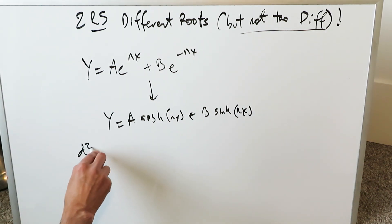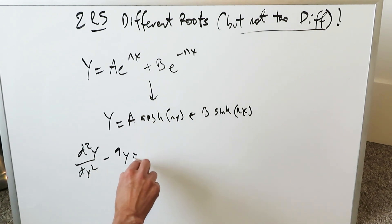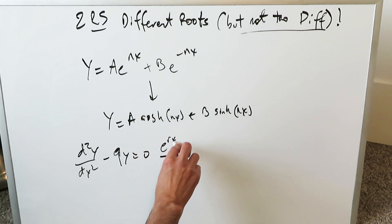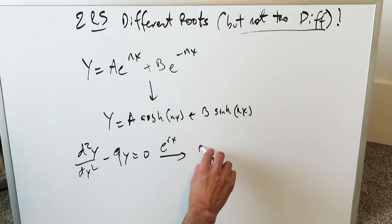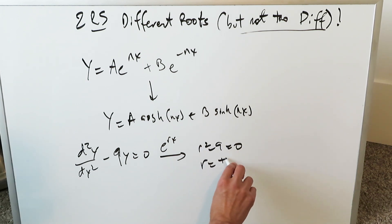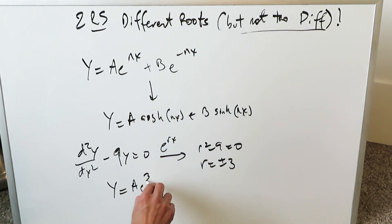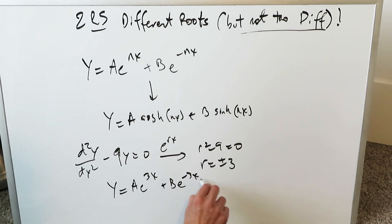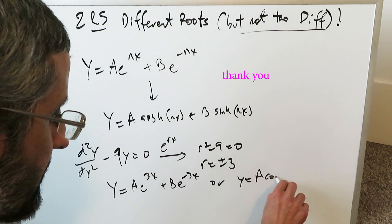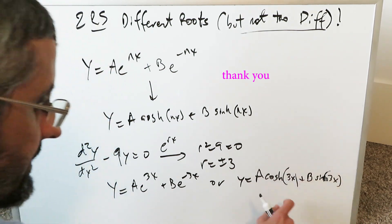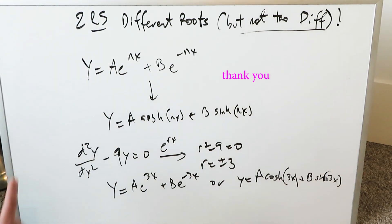For example, d squared y over dx squared minus 9y equals 0 generates this scenario. After the e to the rx substitution, you get r squared minus 9 equals 0, so r equals plus and minus 3. You can write the solution two ways: y equals a e to the 3x plus b e to the minus 3x, or y equals a hyperbolic cosine 3x plus b hyperbolic sine 3x. The negative gets consumed in the procedure shown earlier. Keep these peculiarities in mind. Thank you for watching, have a good day.